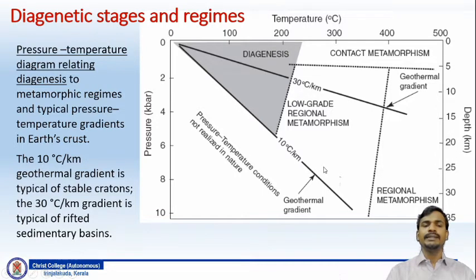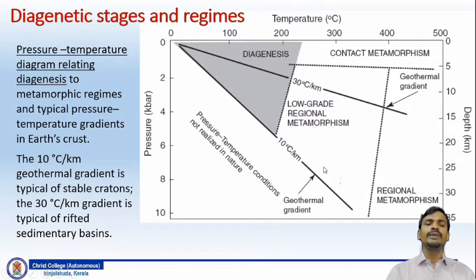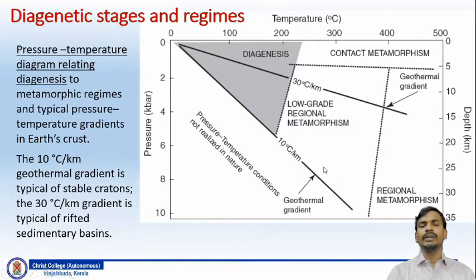Diagenesis also depends on the process called geothermal gradient. A 10 degrees Celsius per kilometer geothermal gradient is typical of stable cratons, whereas a 30 degrees Celsius per kilometer gradient is typical of rift sedimentary basins. So geothermal gradient is also an important factor in diagenesis.